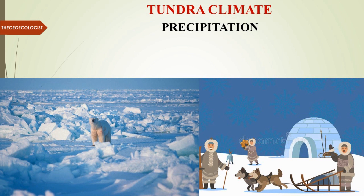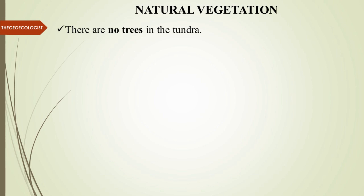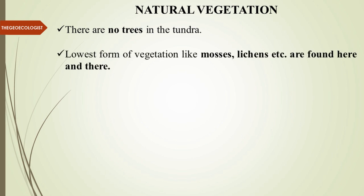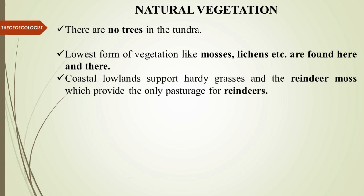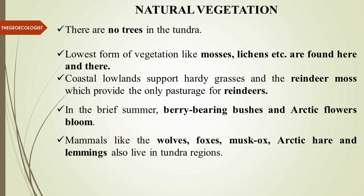There are no trees in the tundra — trees are completely absent. Mosses and lichens are found distributed across the region. Coastal lowlands support hardy grasses, which provide pasture for reindeer — reindeer mosses are a well-known example. In the brief summer, berry-bearing bushes and Arctic flowers bloom. Major mammals include wolves, foxes, musk ox, Arctic hare, and lemmings, along with penguins in Antarctica and the famous polar bear.